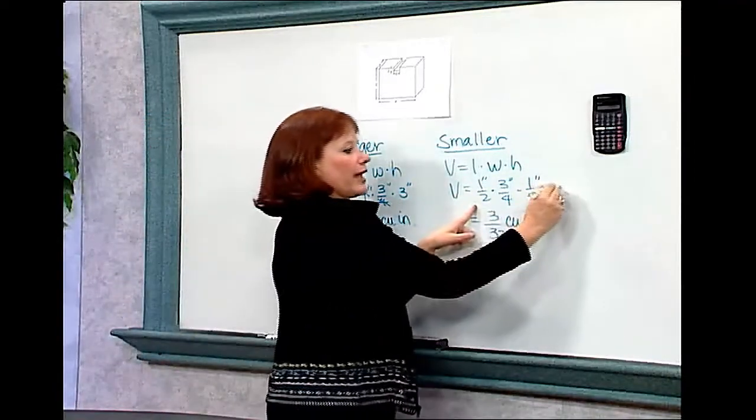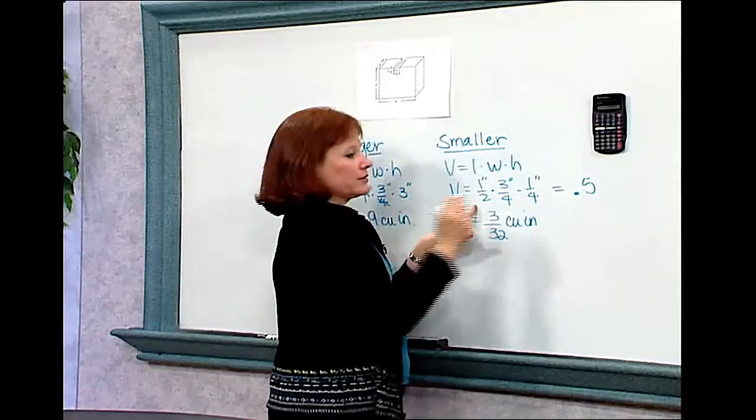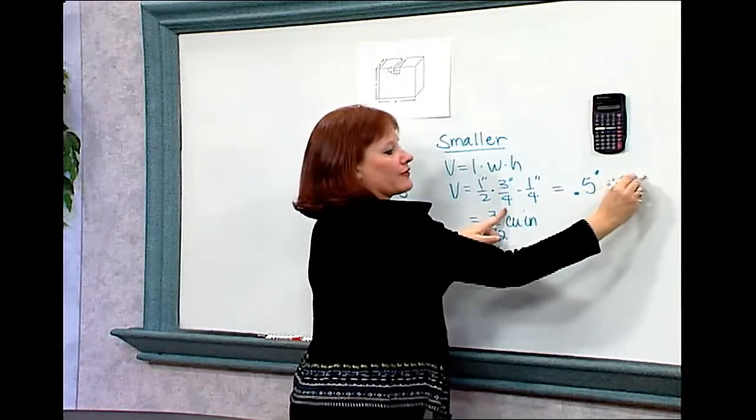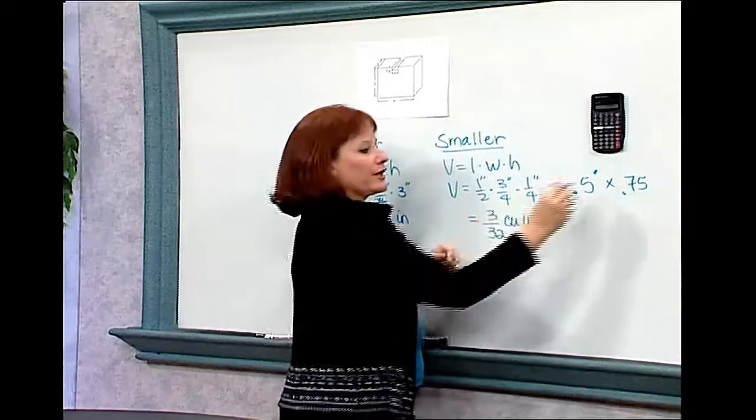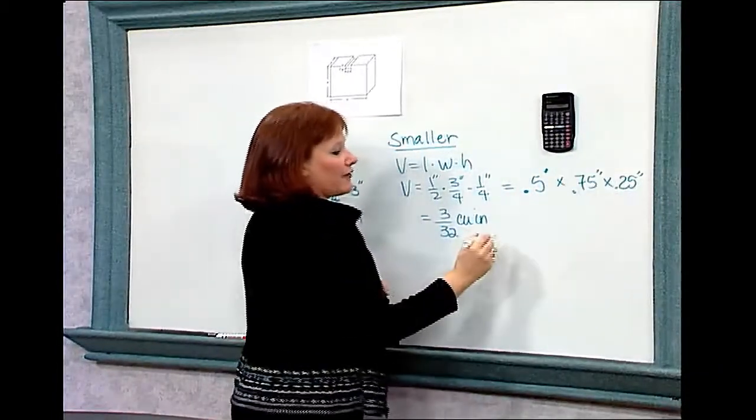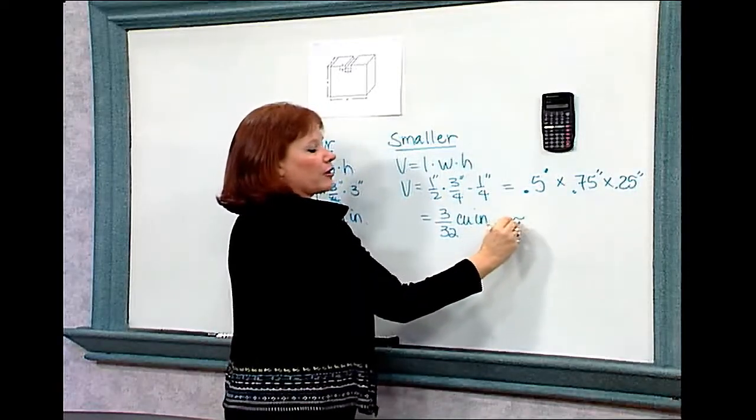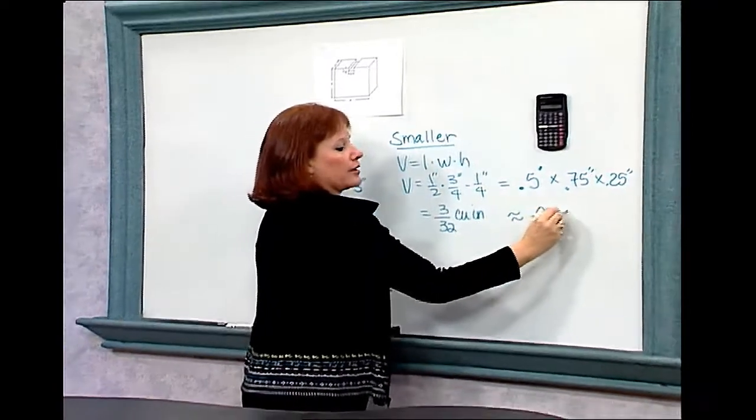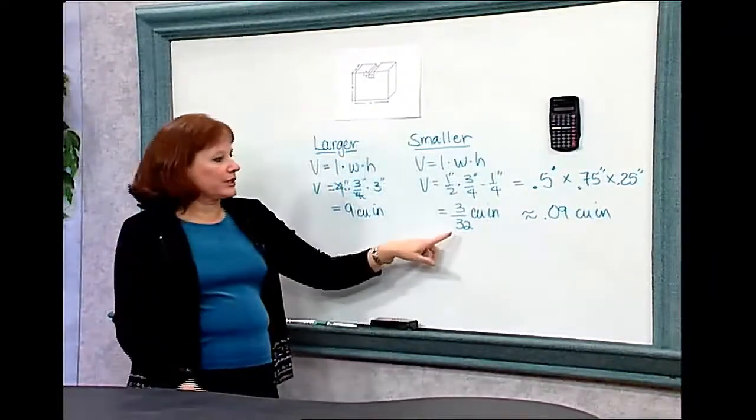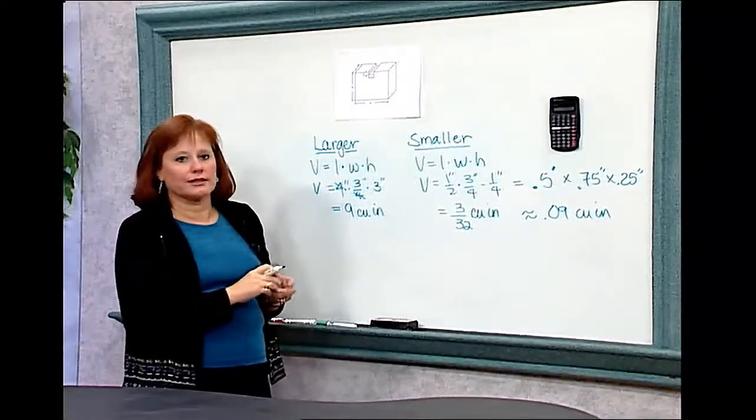I realize that 1/2 inch is the same as 0.5 inches, 3/4 of an inch is the same as 0.75 inches, and 1/4 of an inch is the same as 0.25 inches. If I multiply those together, I find that they are about equal to 0.09 cubic inches. 0.09 cubic inches has approximately the same value as 3/32 of a cubic inch.